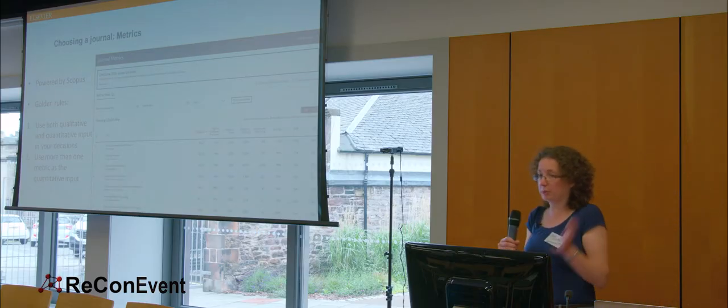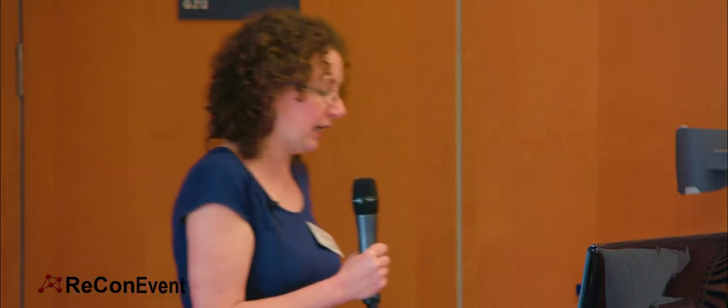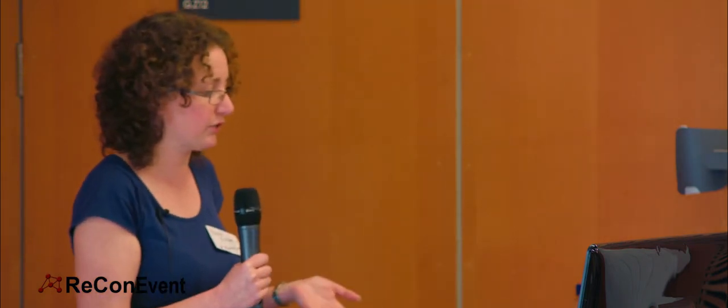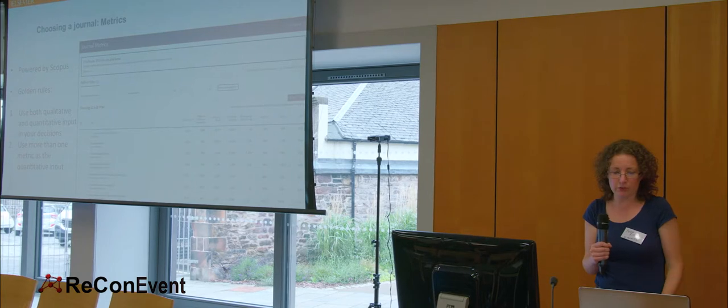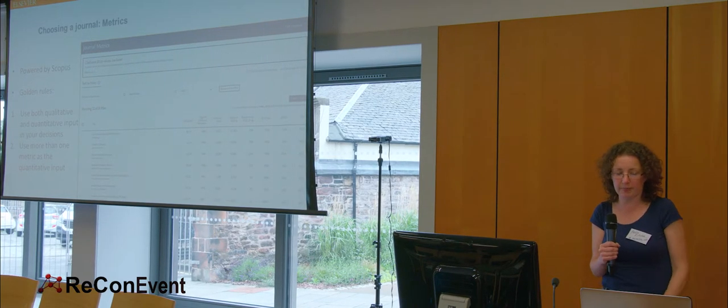At some point you're probably going to be thinking, you've got your work and you want to be publishing, you want to be getting it out there, maybe in a journal. For all their flaws, metrics can be useful. They're only part of what you might take into account for choosing a journal, but there are tools out there that are metrics-based that can help you. Journal Metrics is powered by Scopus, the citation index.